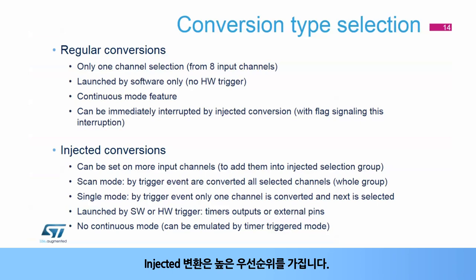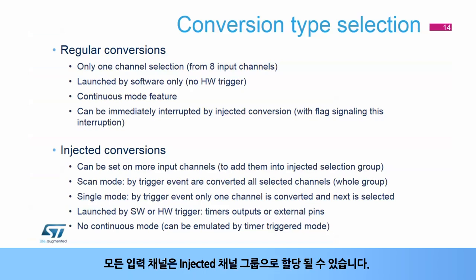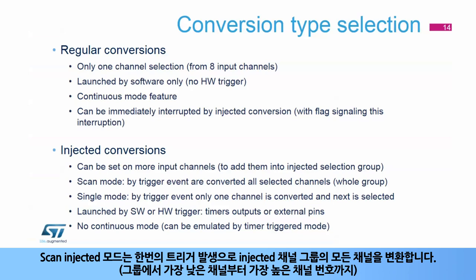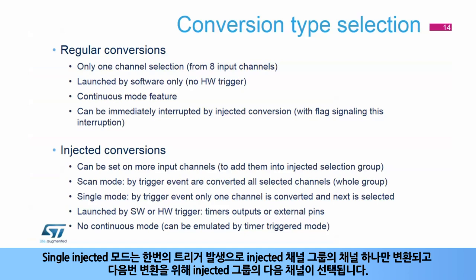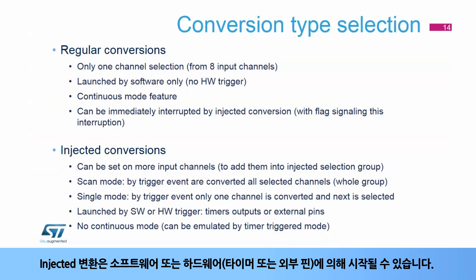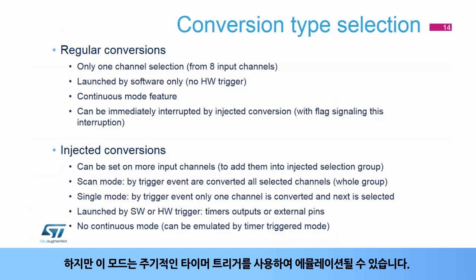Injected conversions have high priority. They can interrupt regular conversions immediately and start just after being triggered. Any input channel can be assigned to an injected channels group. There are two modes: scan mode and single mode. In scan injected mode, all channels in the injected group are converted from lowest to highest channel number when a trigger occurs. In single injected mode, only one channel is converted per trigger, and the next channel is selected for the following conversion. Injected conversions can be launched by software or by hardware from timers or an external pin, but cannot run in continuous mode — though this can be emulated using a periodic timer trigger.